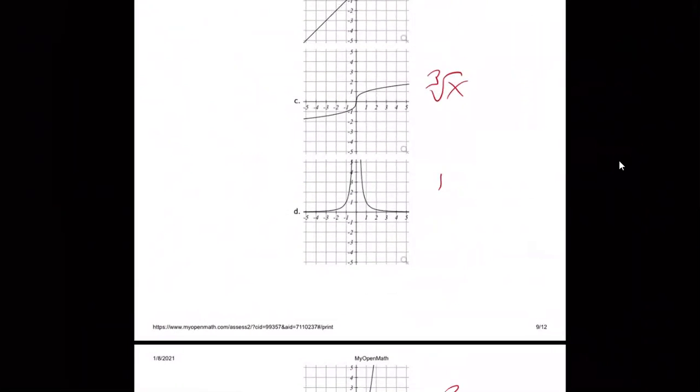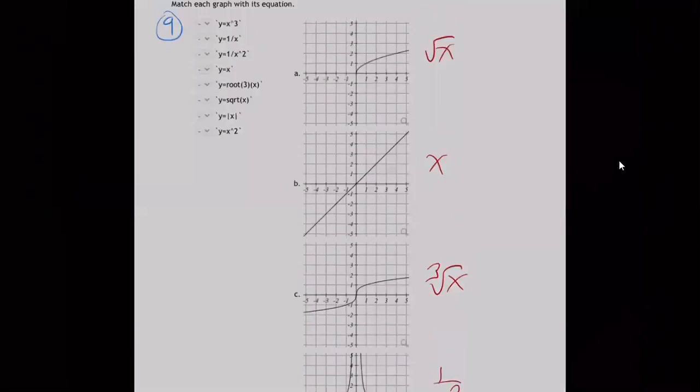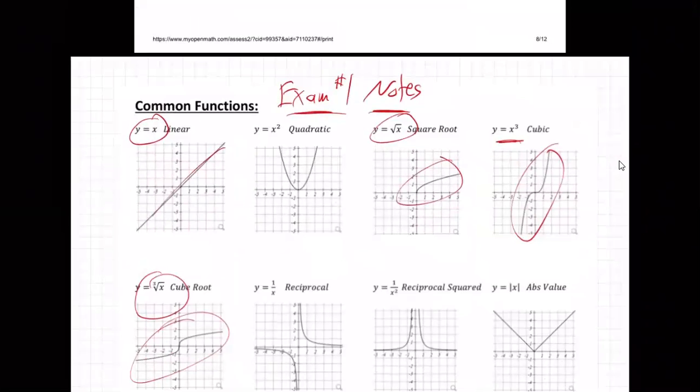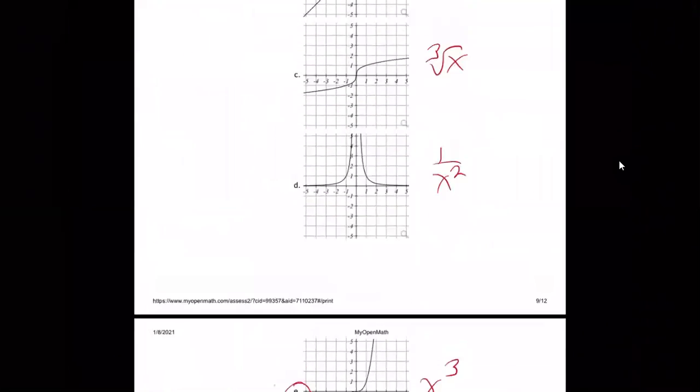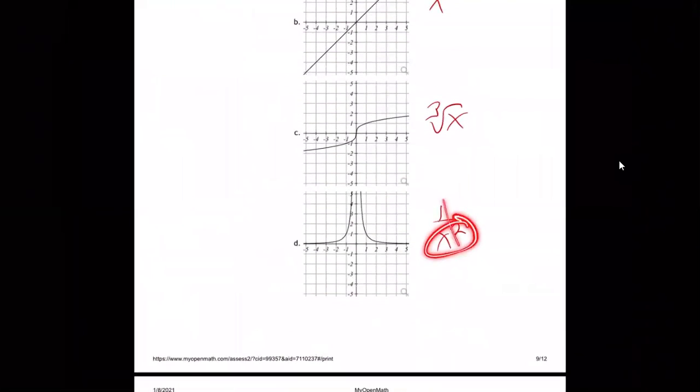Now both these going up. This is one over x squared. It's reciprocal squared. Right here. Why? Because it's squared. It's x squared, which makes everything positive. So it's all going up. Makes everything positive because it's squared. So that's why it's all up.